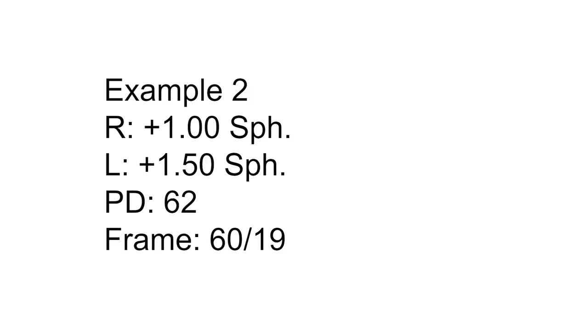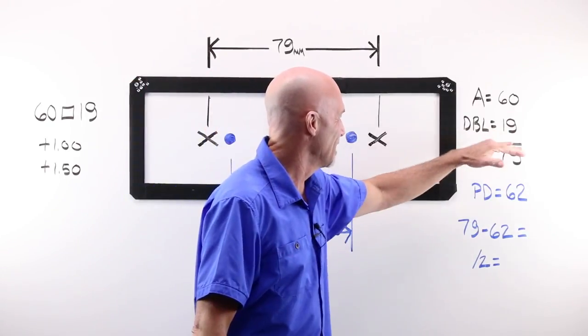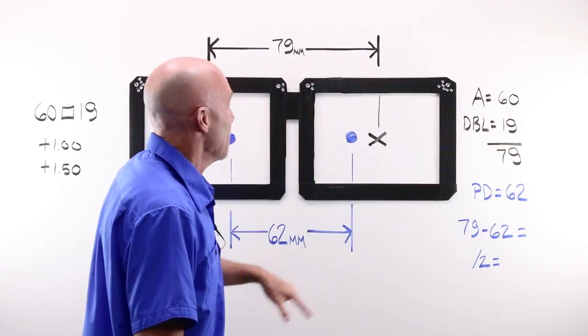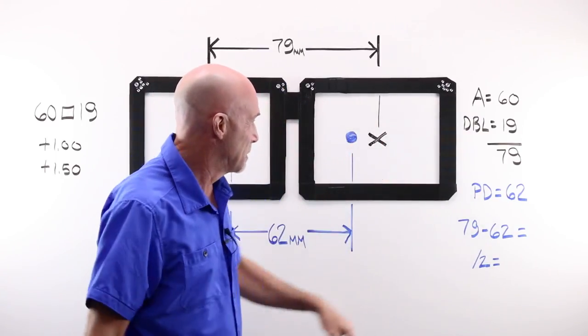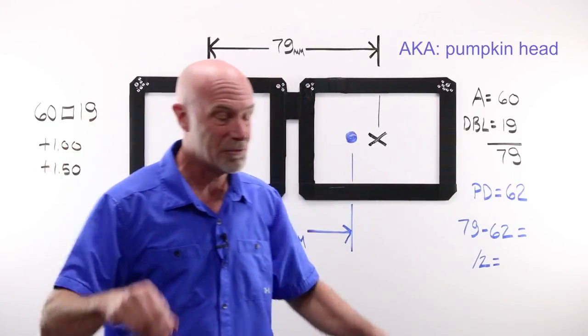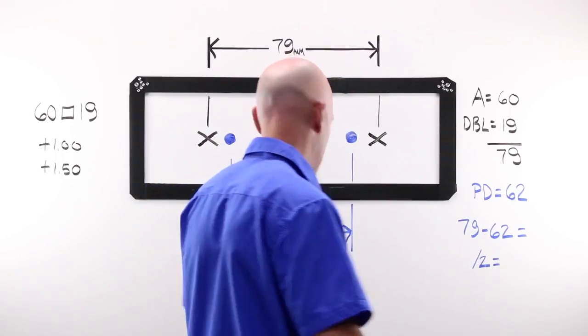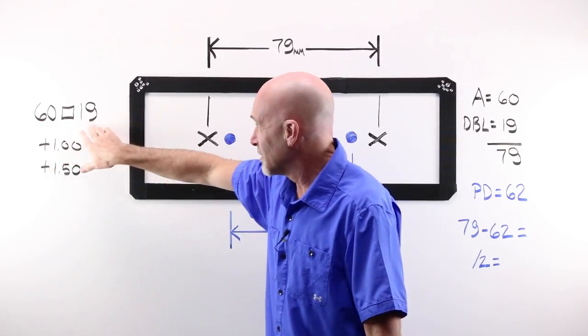We'll have a plus one in the right, a plus 150 in the left, customer PD of 62, frame measurements of 60-19. What is my frame PD? My A, my DBL, my A is 60, my DBL is 19. It means it's a pretty big frame. The A opening is quite large. The distance between my two lenses is pretty big. I have a frame PD of 79 millimeters. It's a big man's frame or one of those horrible sunglasses that are out now. It's boxing system measurement would be 60 box 19.